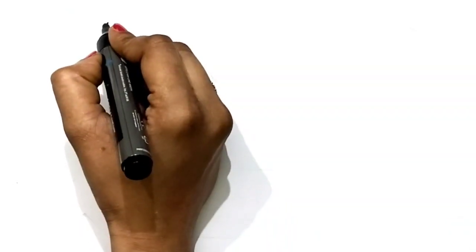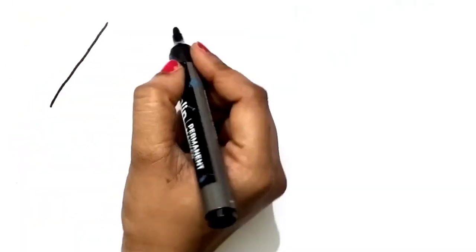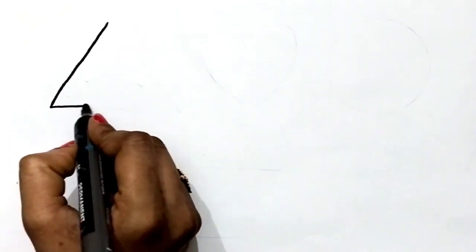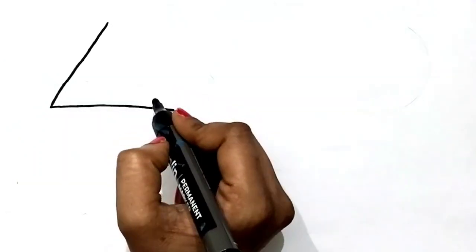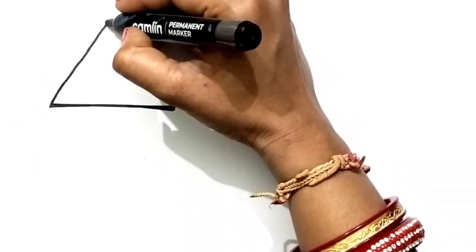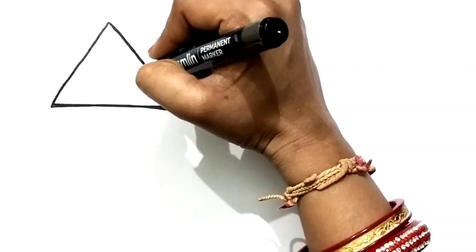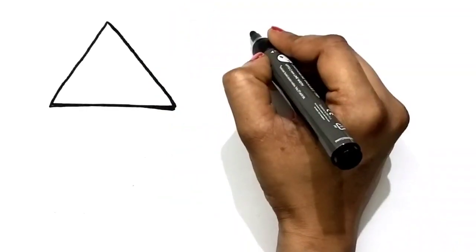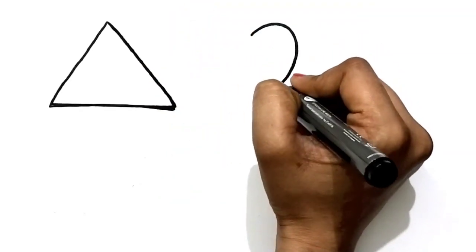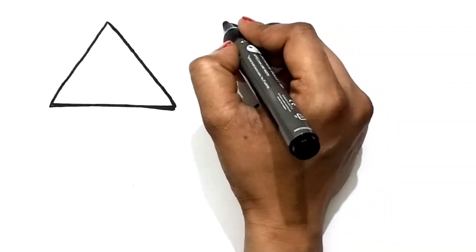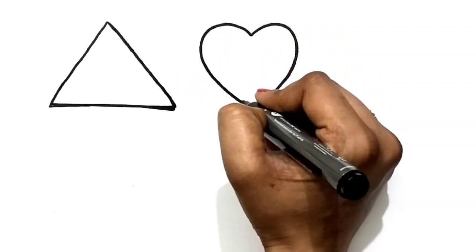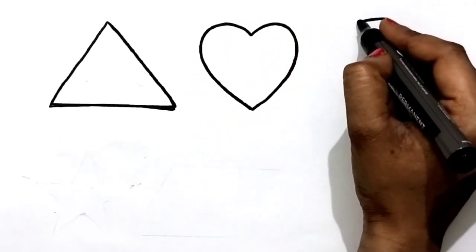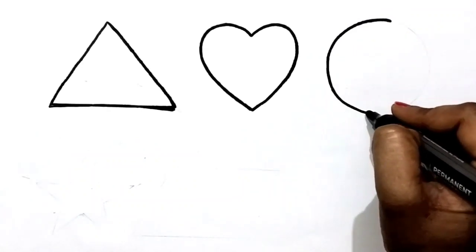Start drawing. Triangle. H-I-J-K, L-M-N-O-P, Q-R-S-T-U-V, W-X, Y-and-Z. Now I know my ABCs, next time won't you sing with me.